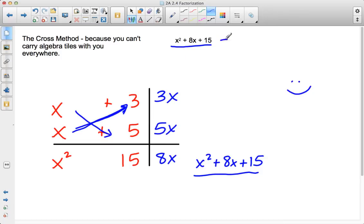What does that mean? That means that my answer is, as I read this straight across, we see that the factored form of x² + 8x + 15 is going to be x + 3, in parentheses, times x + 5. That is how the cross method works.